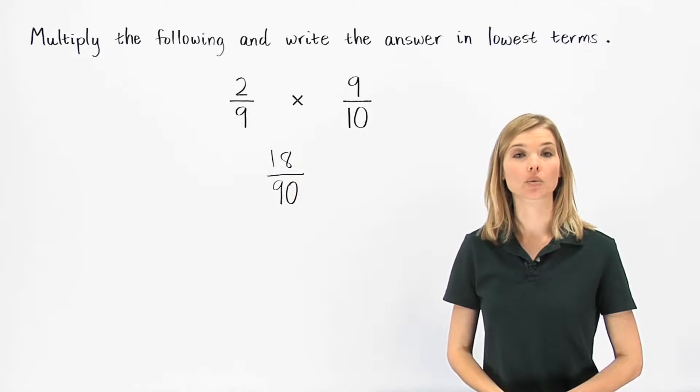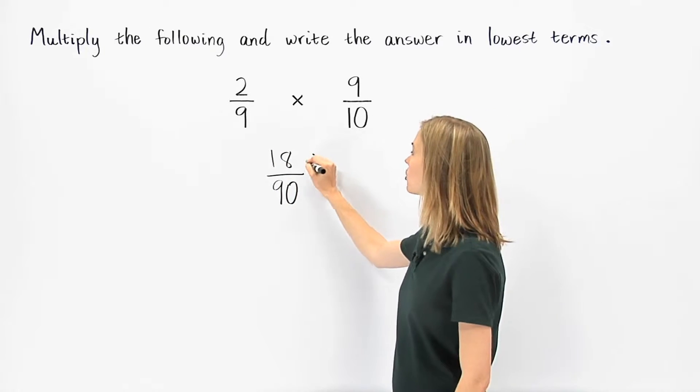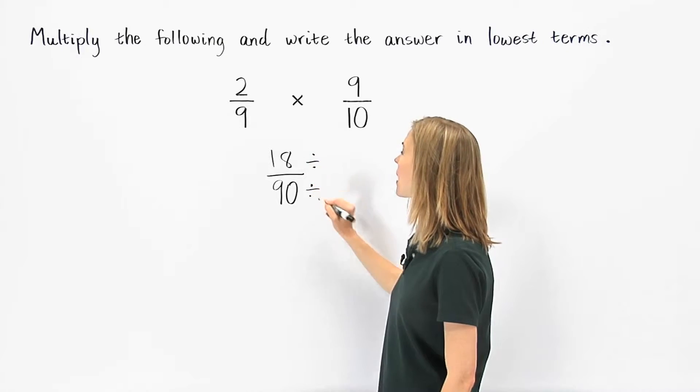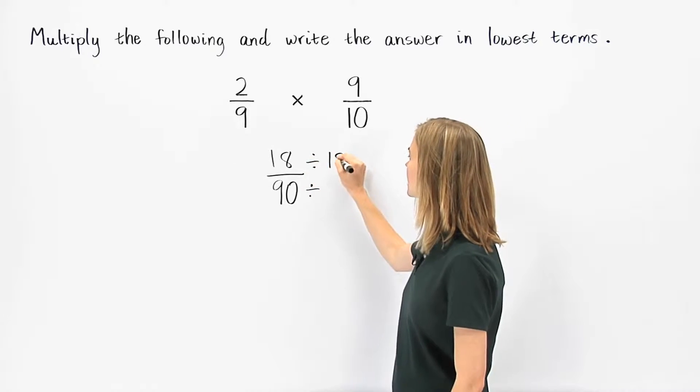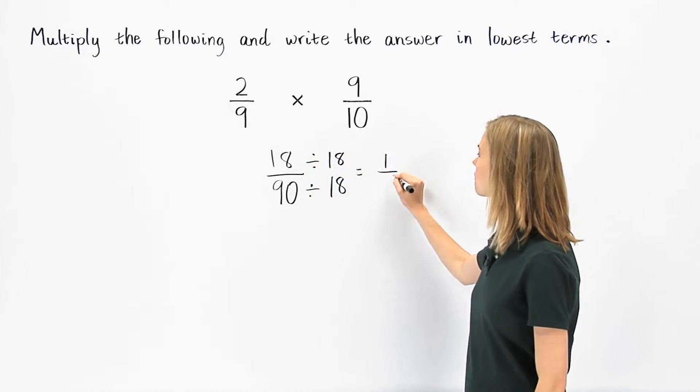To get 18 over 90 in lowest terms, we divide the numerator and denominator by the greatest common factor of 18 and 90, which is 18, to get 1 fifth.